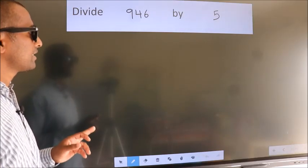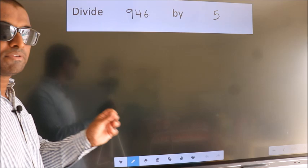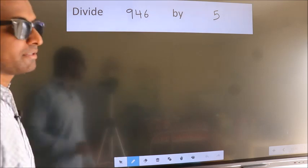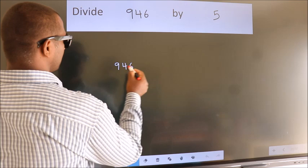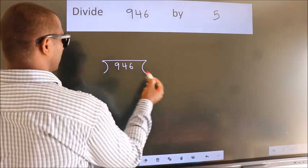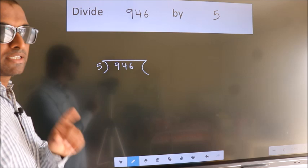Divide 946 by 5. To do this division, we should frame it in this way. 946 here, 5 here. This is your step 1.